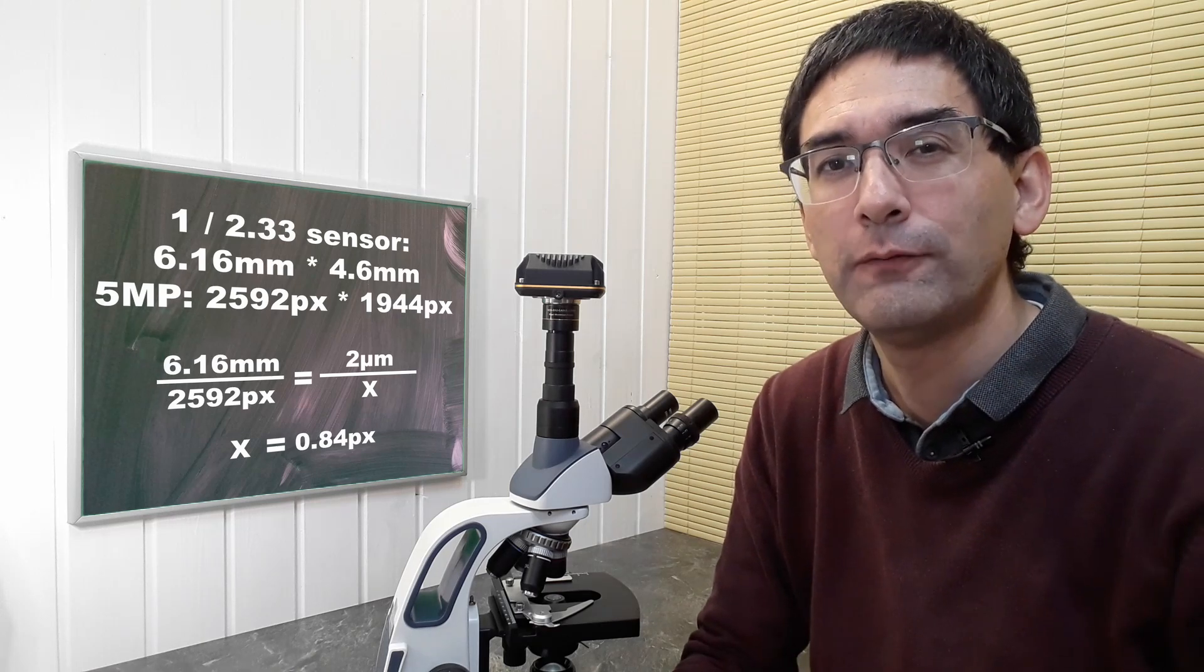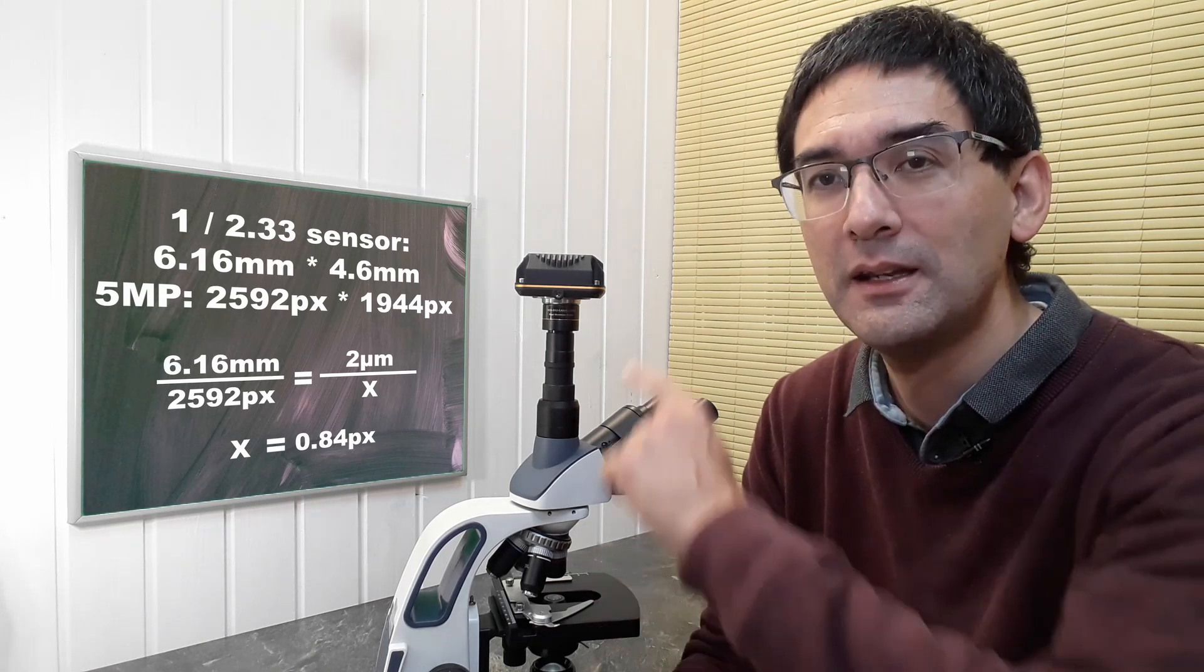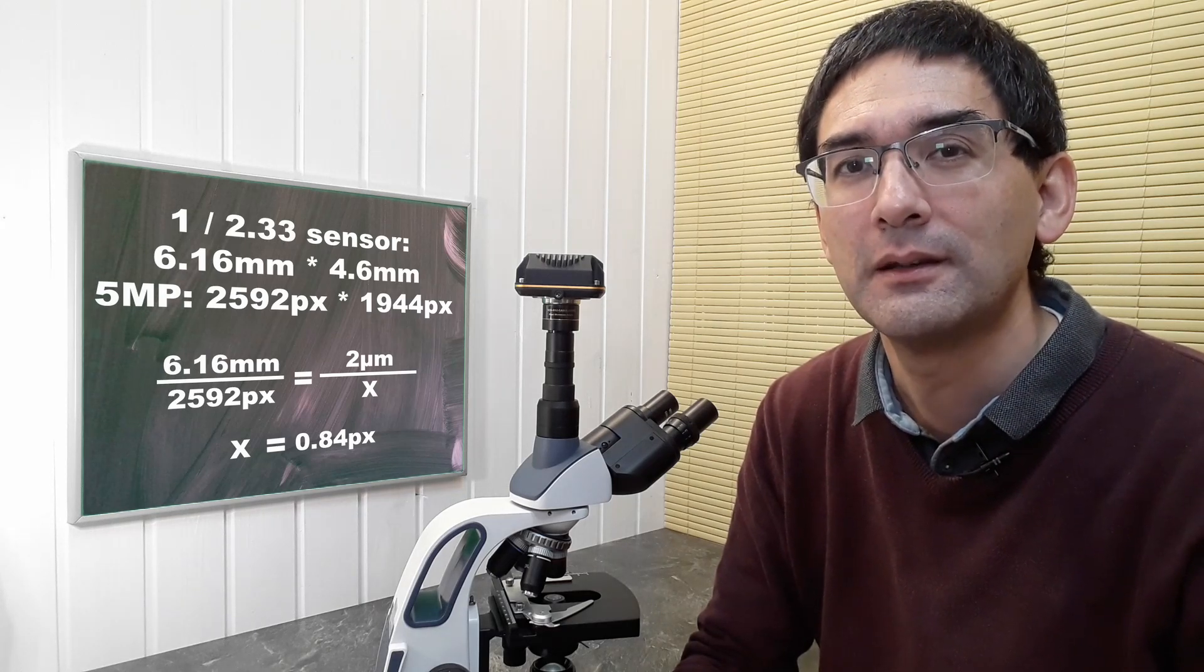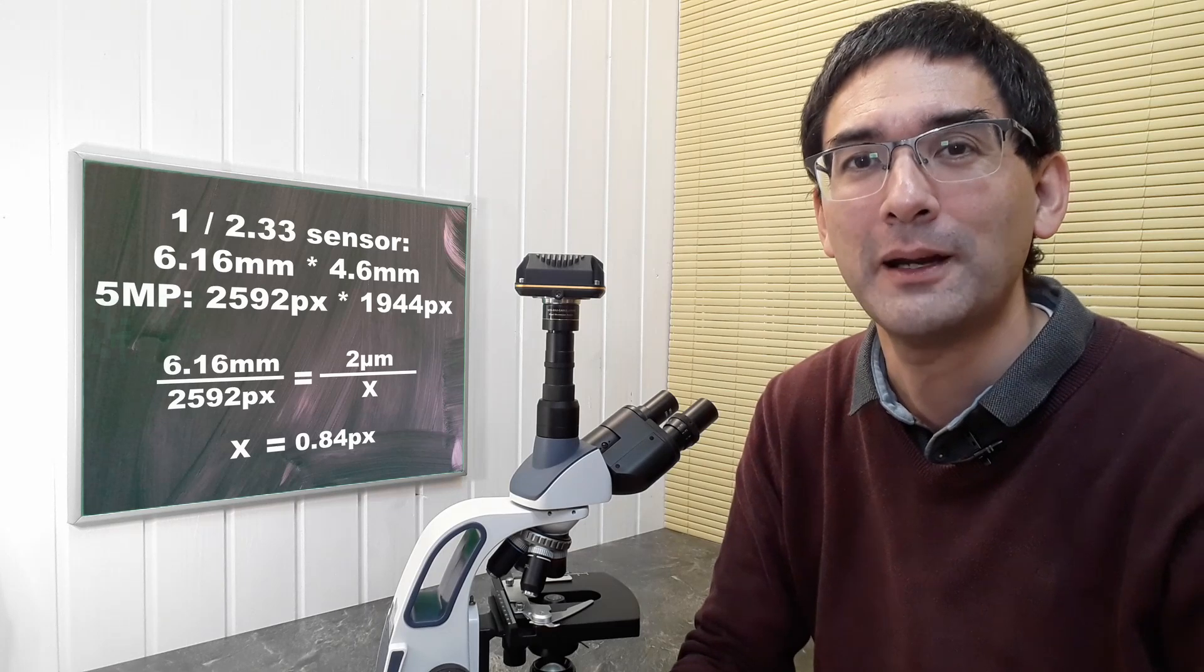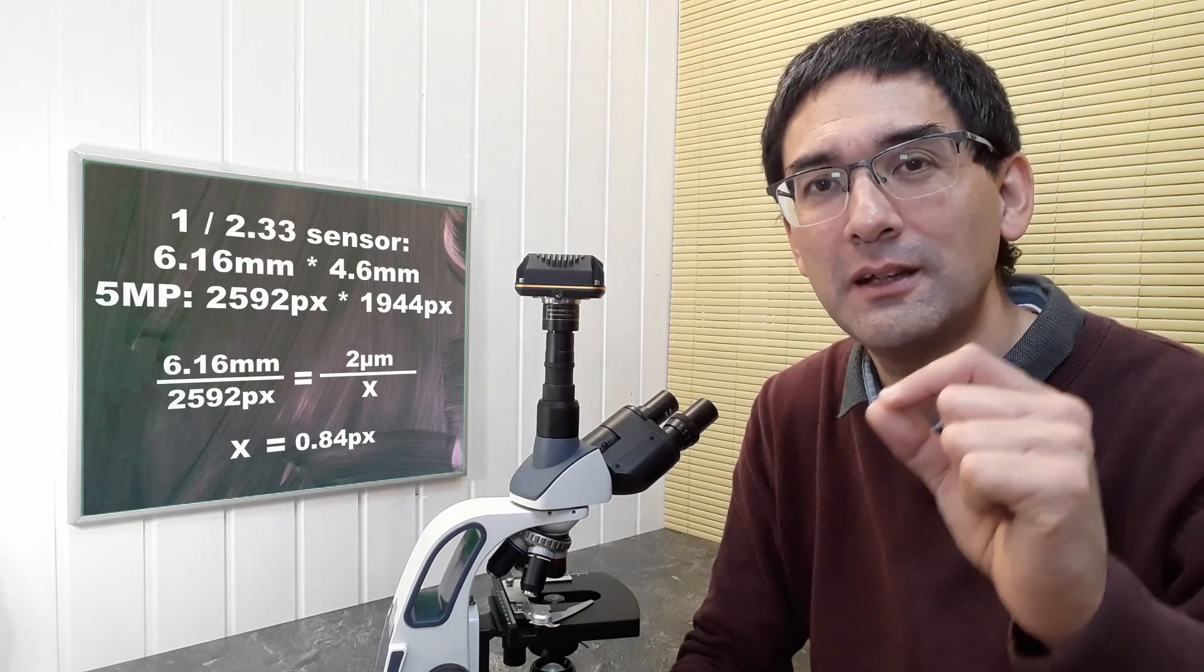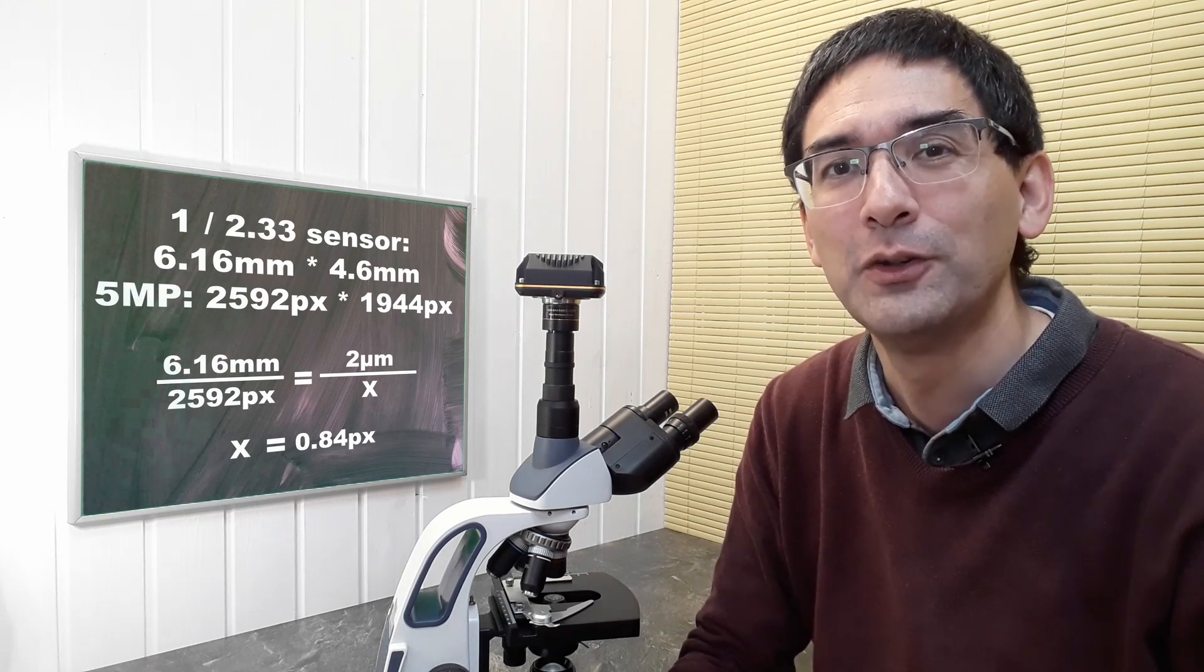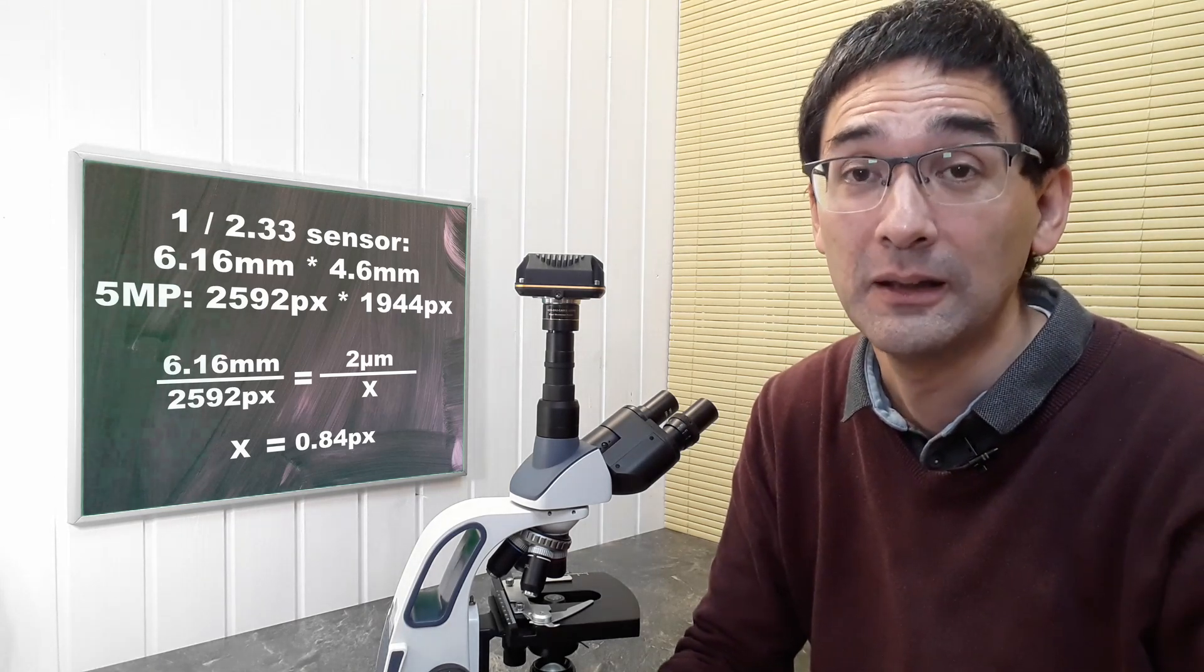Using a four times objective and a 0.5 times reduction optics, I would not be able to see a bacterium of one micrometer because that would take the space of less than one pixel, 0.8 pixels. Already I know this is way too little.